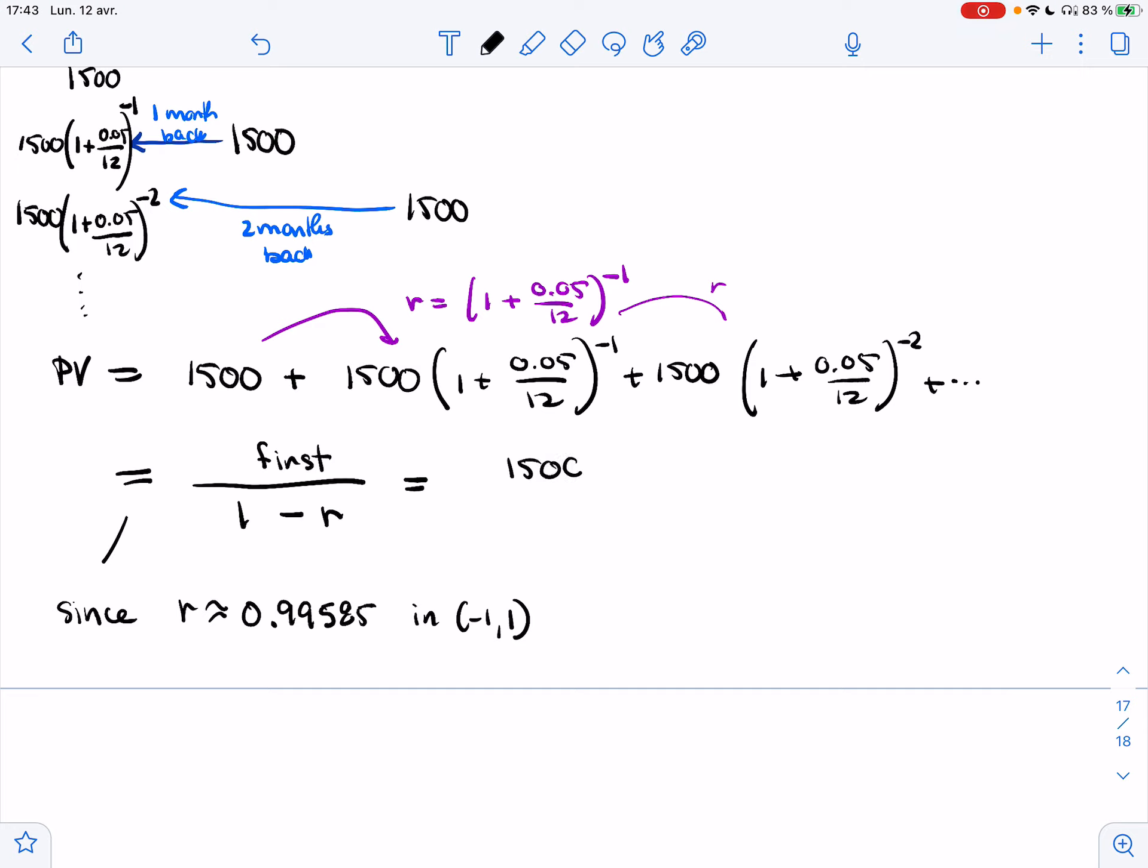And so it will converge to first over 1 minus ratio. So it will converge to 1,500 over, I can't use this, I want to use the exact value. So I'm going to use this. So 1 minus (1 + 0.05/12)^-1. Let me compute it again. So I get 1,500 over this. So 1 minus (1 + 0.05/12)^-1. So what I get is $361,479.97.